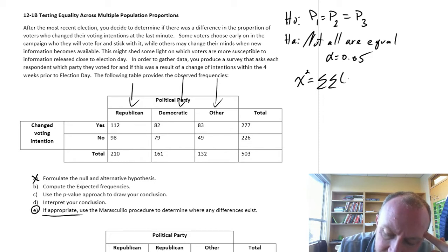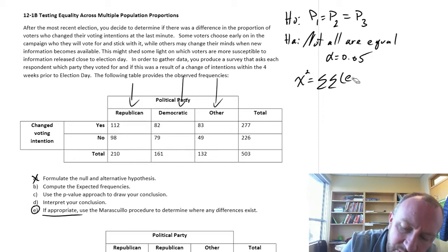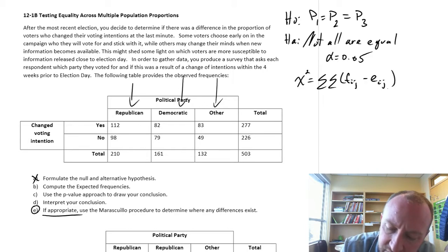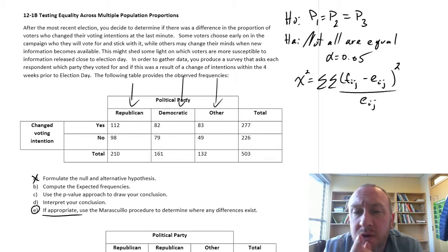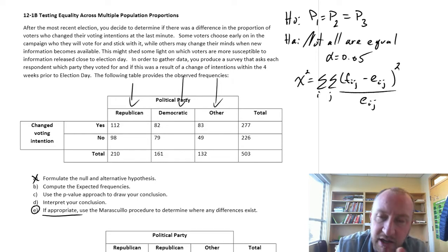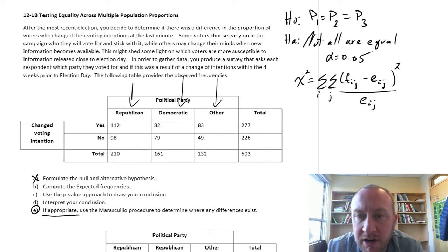And what we need to do is add up all of these differences between the observed frequencies and the expected frequencies, squared, divided by expected frequencies. So this can be a bit of a tedious calculation, especially these expected frequencies that we have to calculate. So that's going to be our first job for Part B. So what does that mean, our expected frequency? Well.